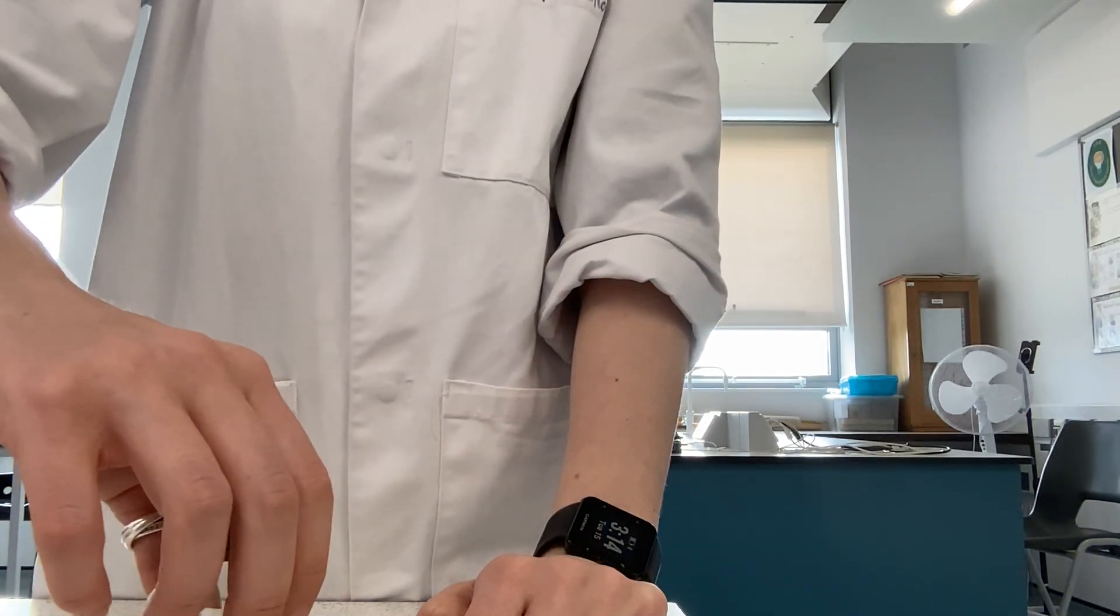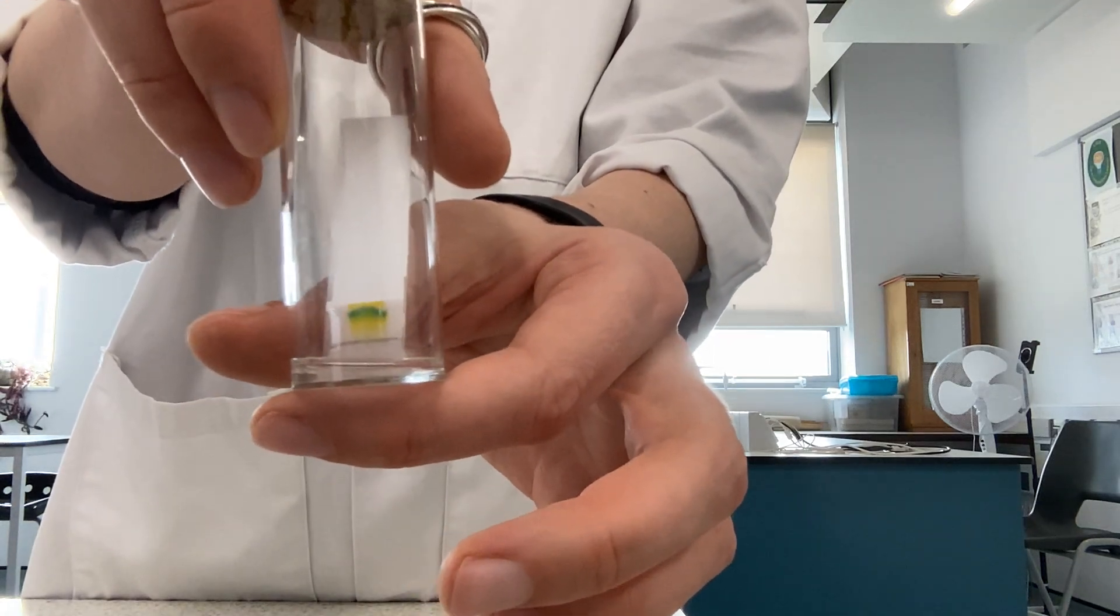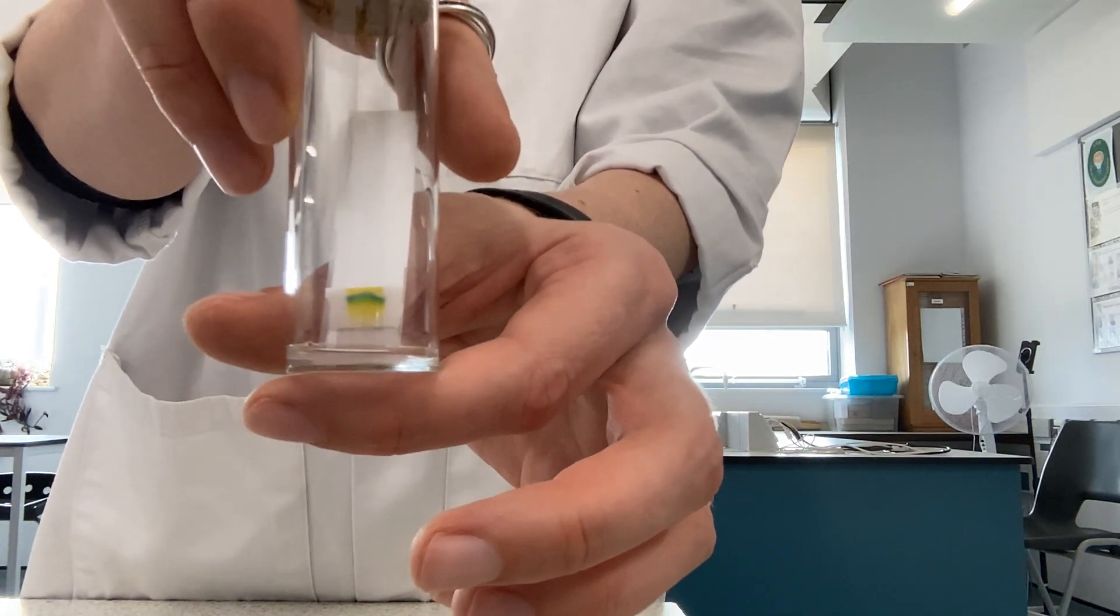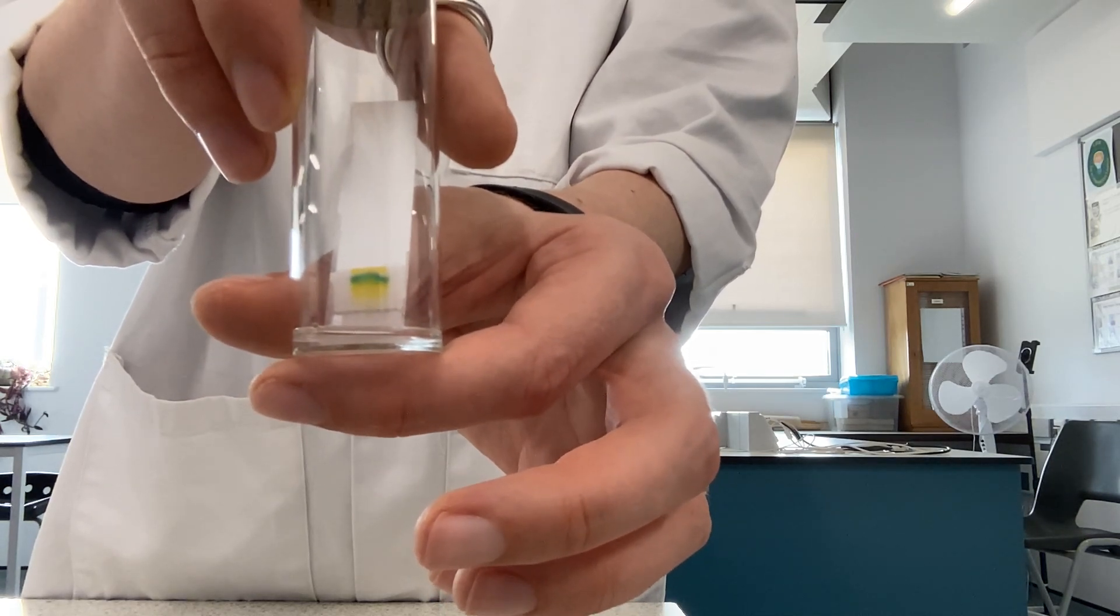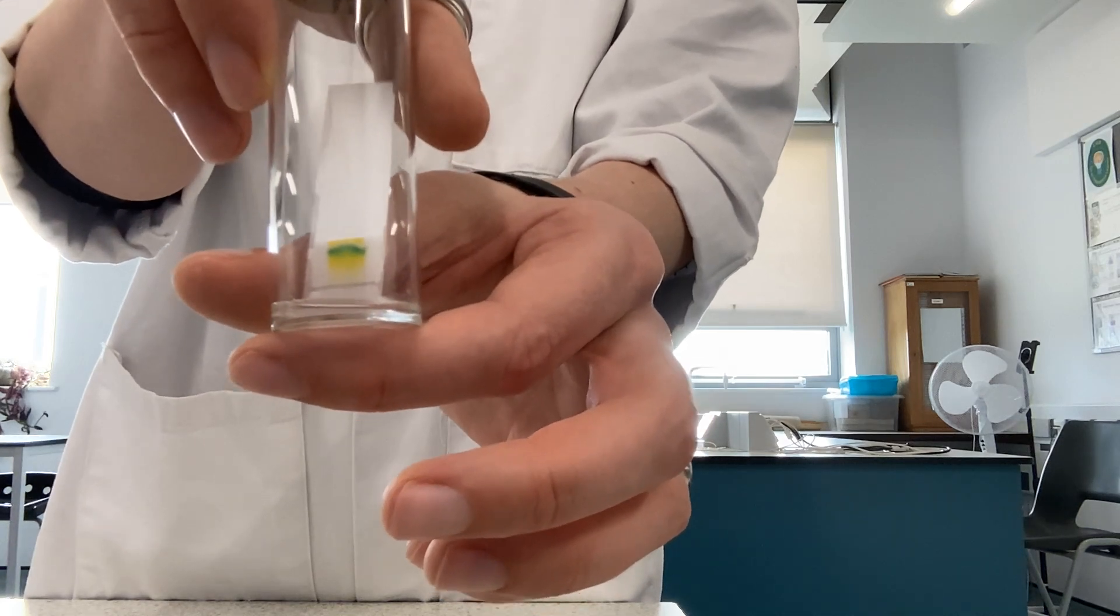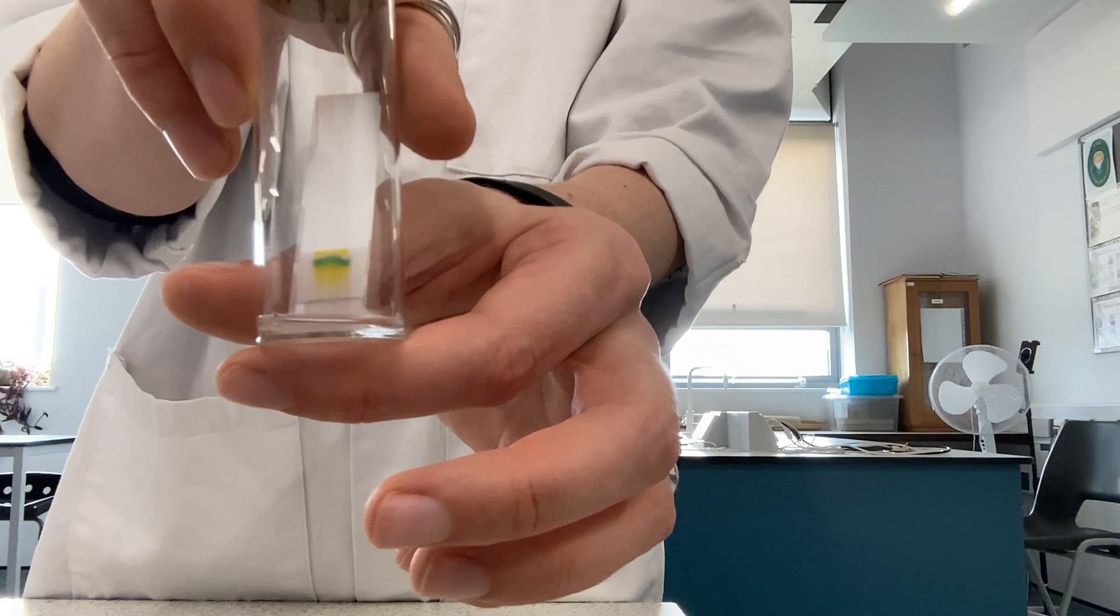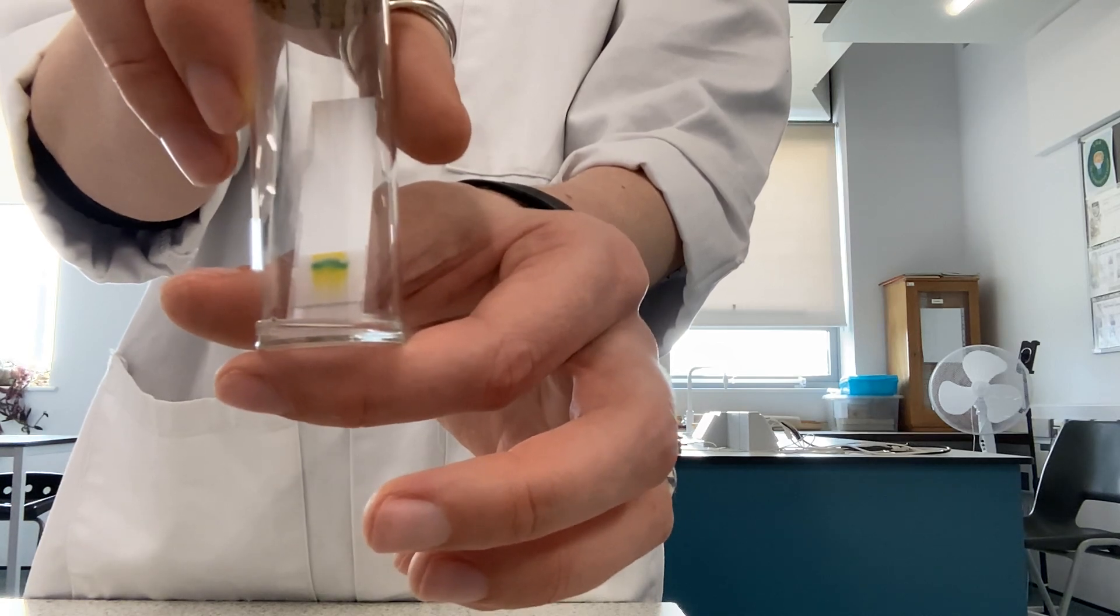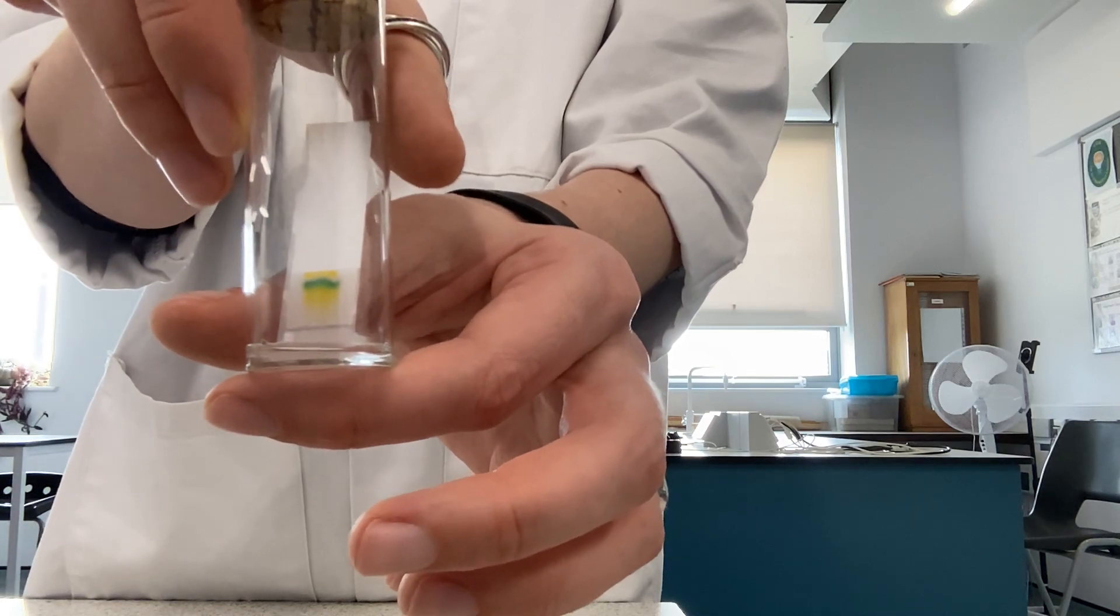Now it runs quite quickly, so if I hold this up to the camera we can see that it's already running up, and we can see a range of different colours that are starting to form as the different pigments separate out. What we'll do is leave this here until the solvent has reached nearly the top of the TLC plate, and then we will remove that and we can start to analyse the TLC that we have got.